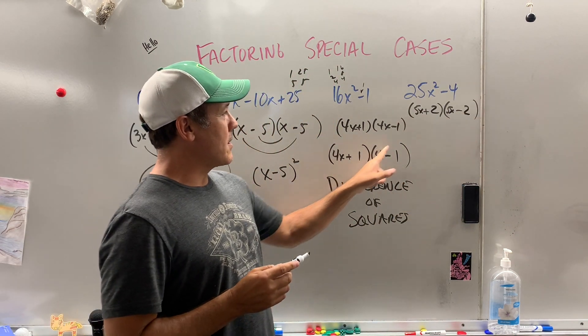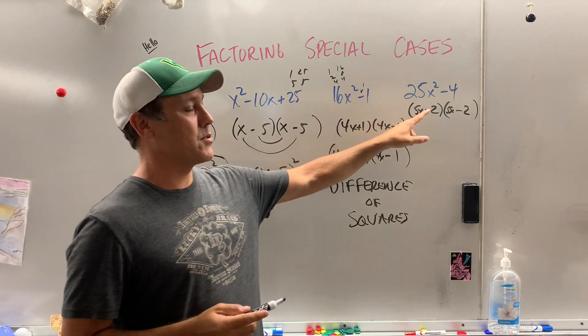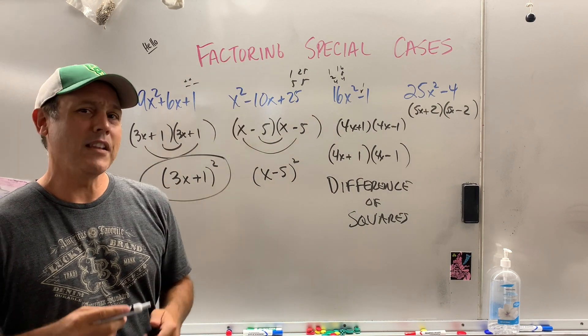Now, by the way, do you notice how I can't group these together like over here? Because one's got a plus, one's got a minus. At any rate, that is how you factor special cases. I love this stuff.